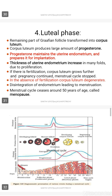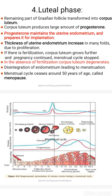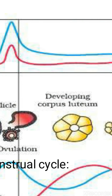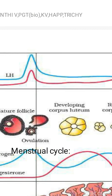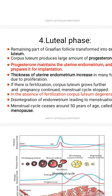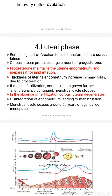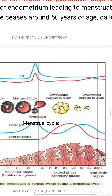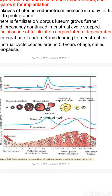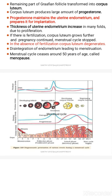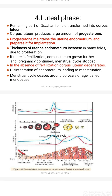Next is the luteal phase. Here, after the release of the ovum, the Graafian follicle is converted into the corpus luteum. The ovulation is completed, and the remnant of the Graafian follicle becomes the corpus luteum. The corpus luteum produces the hormone progesterone, while the Graafian follicle had produced estrogen hormone.